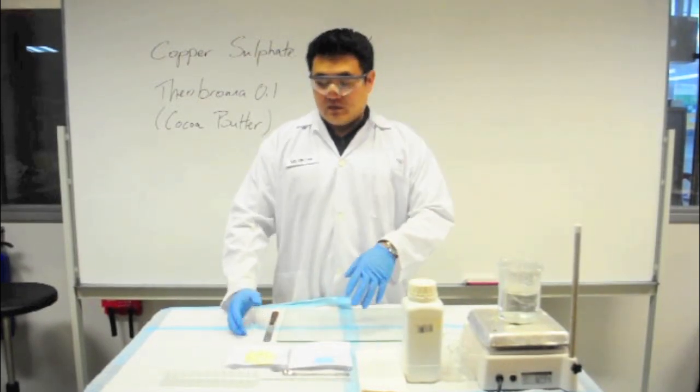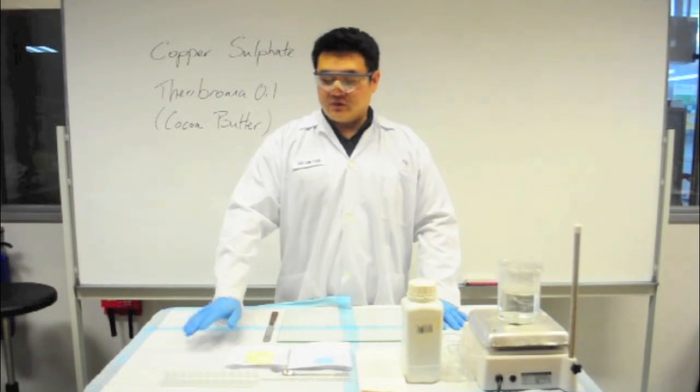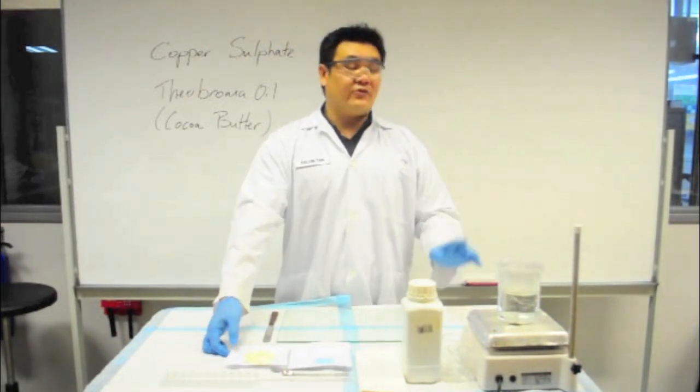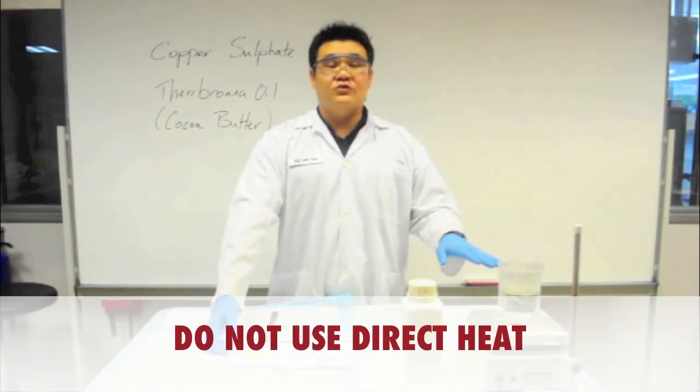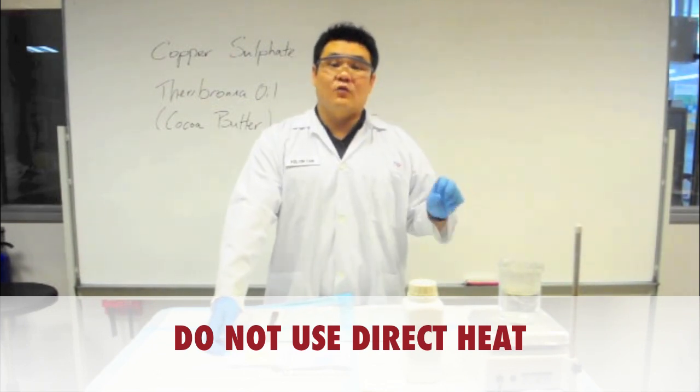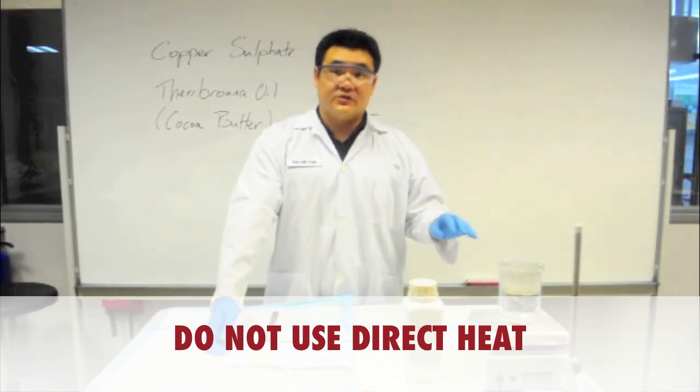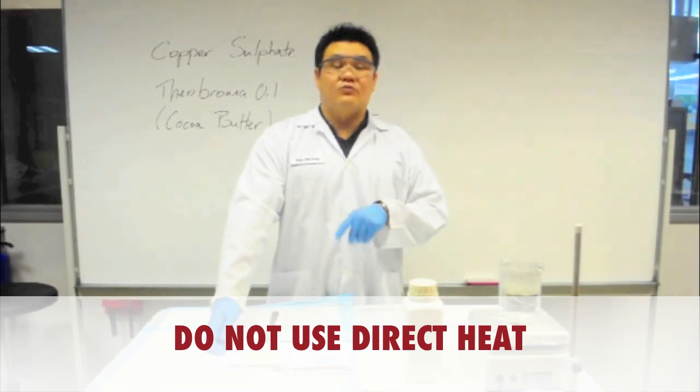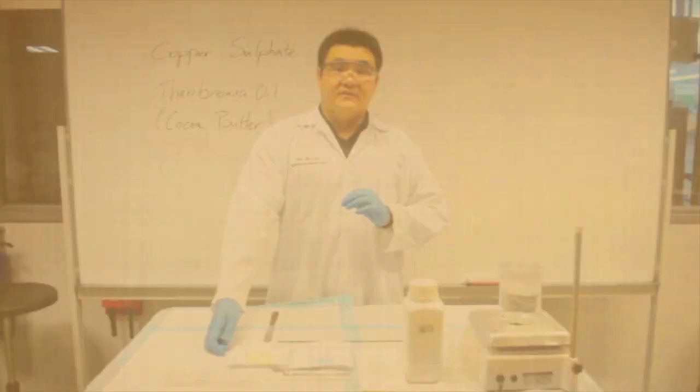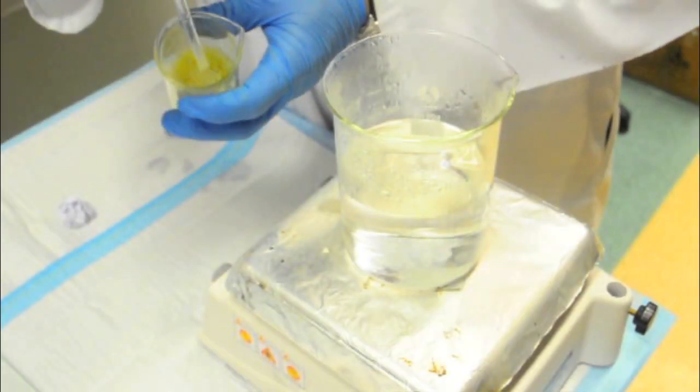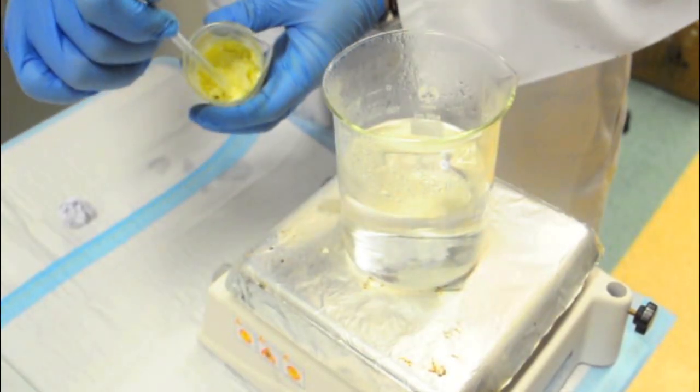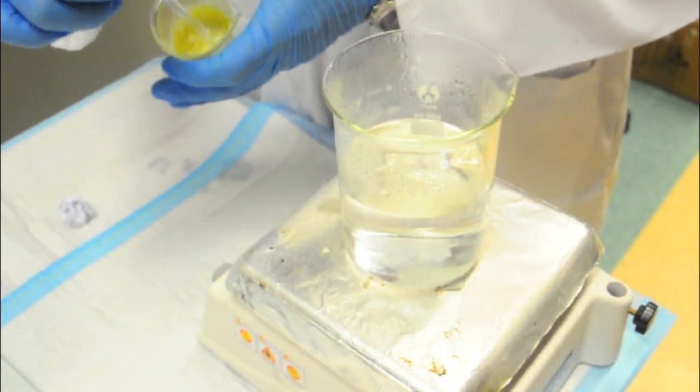And then once you weigh it up, we are going to start making the suppository. So, first step is to melt your theobroma oil inside the water bath. Do not use direct heat because you run the risk of overheating the suppository base and it will not solidify again later. So, when you're ready to start, just transfer all your theobroma oil inside a smaller beaker and you're ready to heat it up.